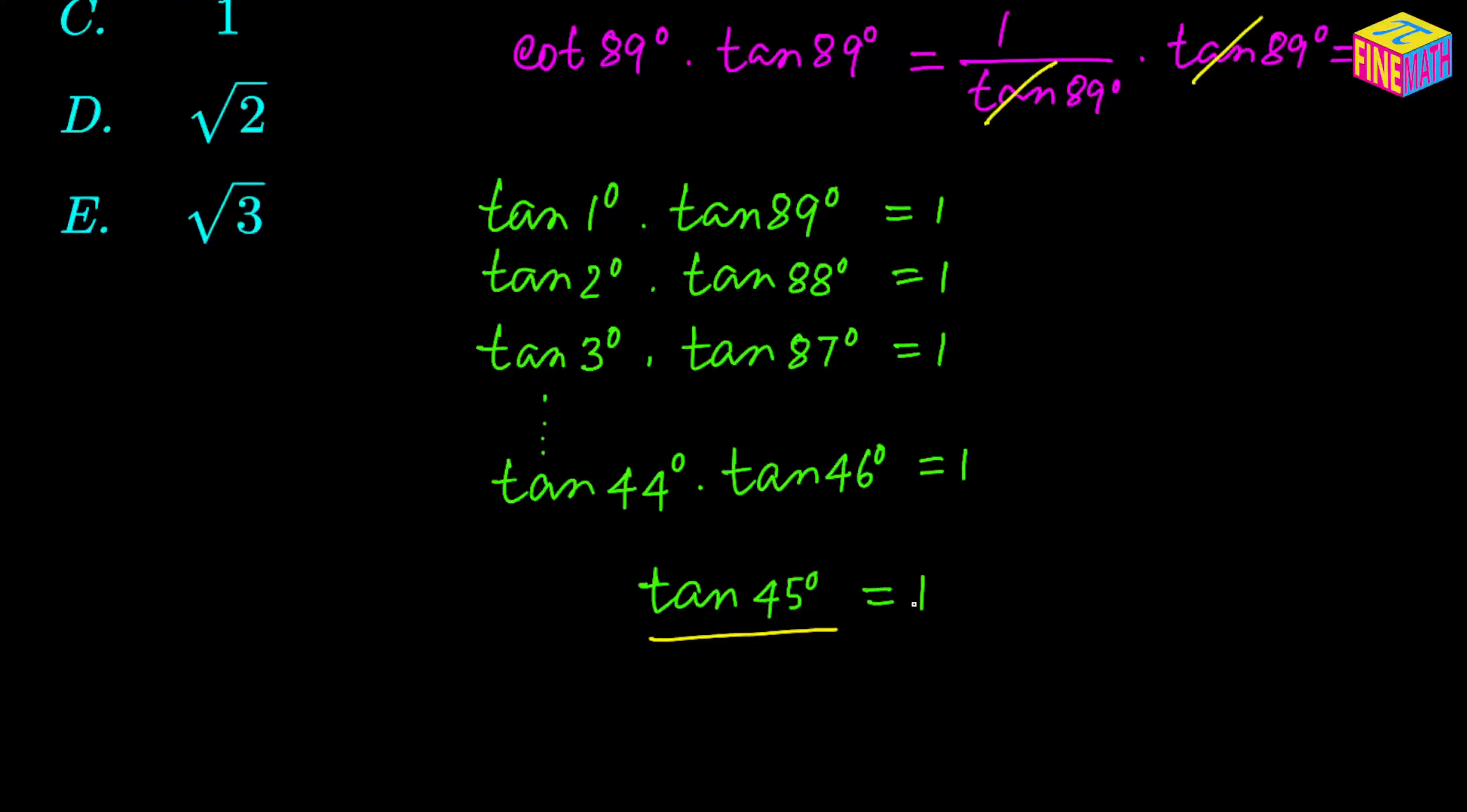So now if you think about it, we have been able to create 44 pairs and this one factor whose value is also 1, and if we take their product, obviously it will be 1. So 1 times 1 times 1, 44 such pairs, multiplied by tangent of 45 degrees, and that is also equal to 1.